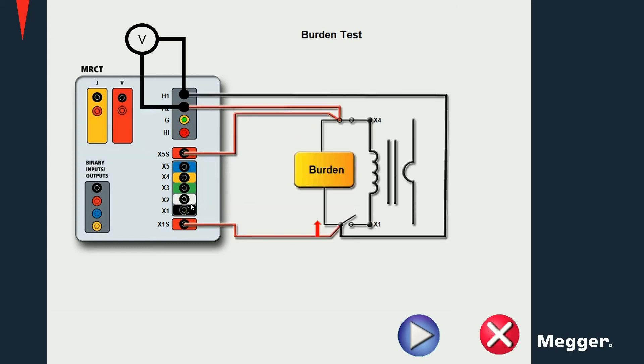To perform a burden test, remember to disconnect the current transformer from its load, since we will be testing only the impedance connected to the secondary terminals and not the secondary winding. A current will be injected in the load circuit, and the impedance will be then calculated.